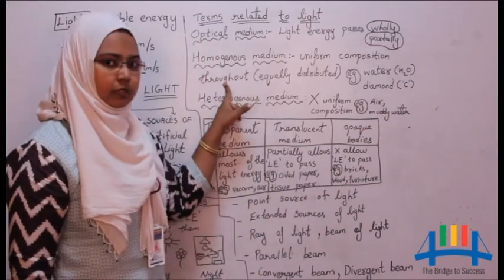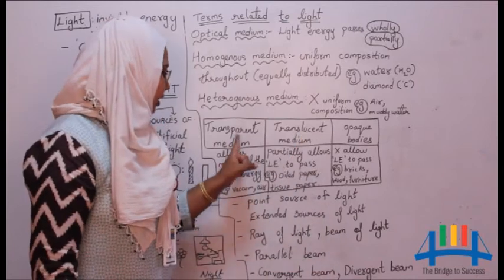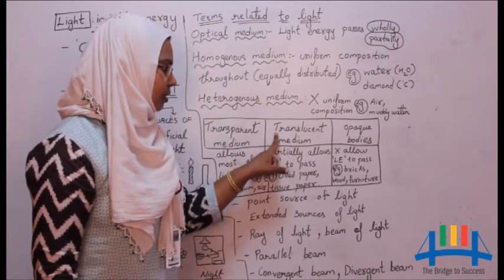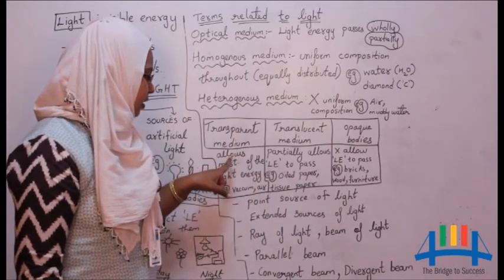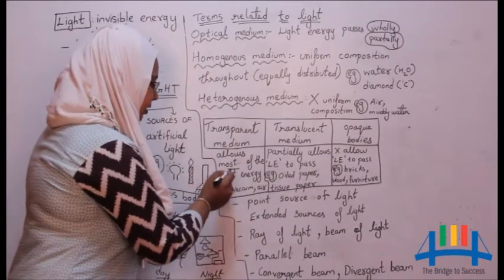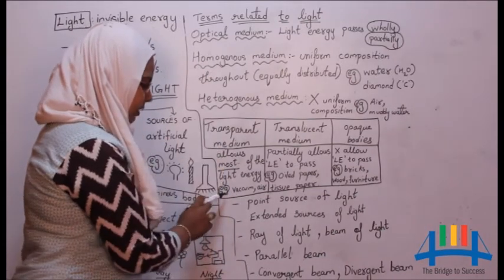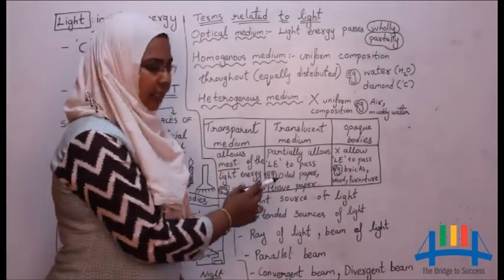In addition to this, we have three other mediums: transparent medium, translucent medium, and opaque bodies. Transparent medium allows most of the light energy to pass through them. Example: vacuum and air.